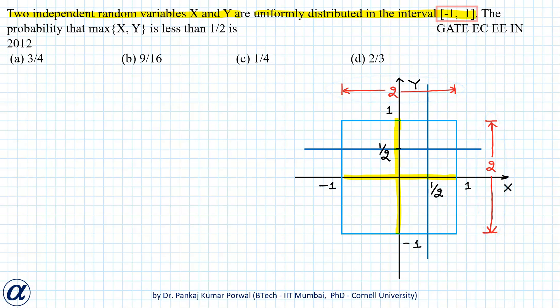Now we want to find the probability that the maximum of X and Y is less than 1/2. Note that max(X, Y) will be less than 1/2 only if both X < 1/2 and Y < 1/2.